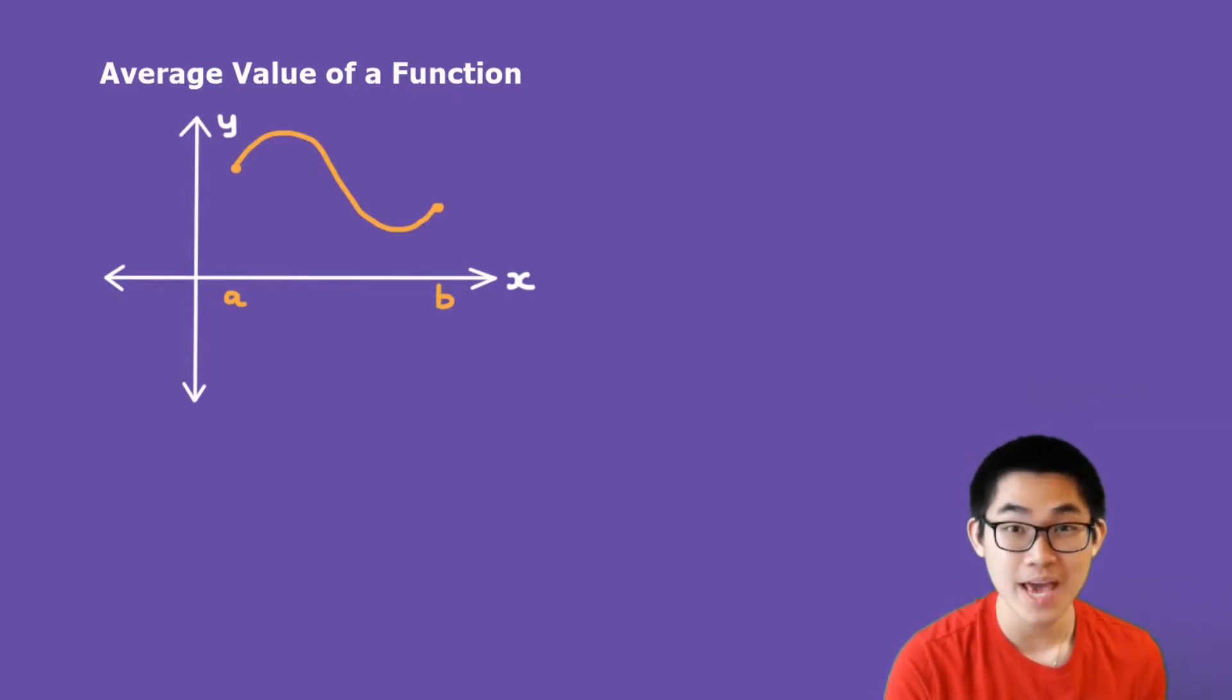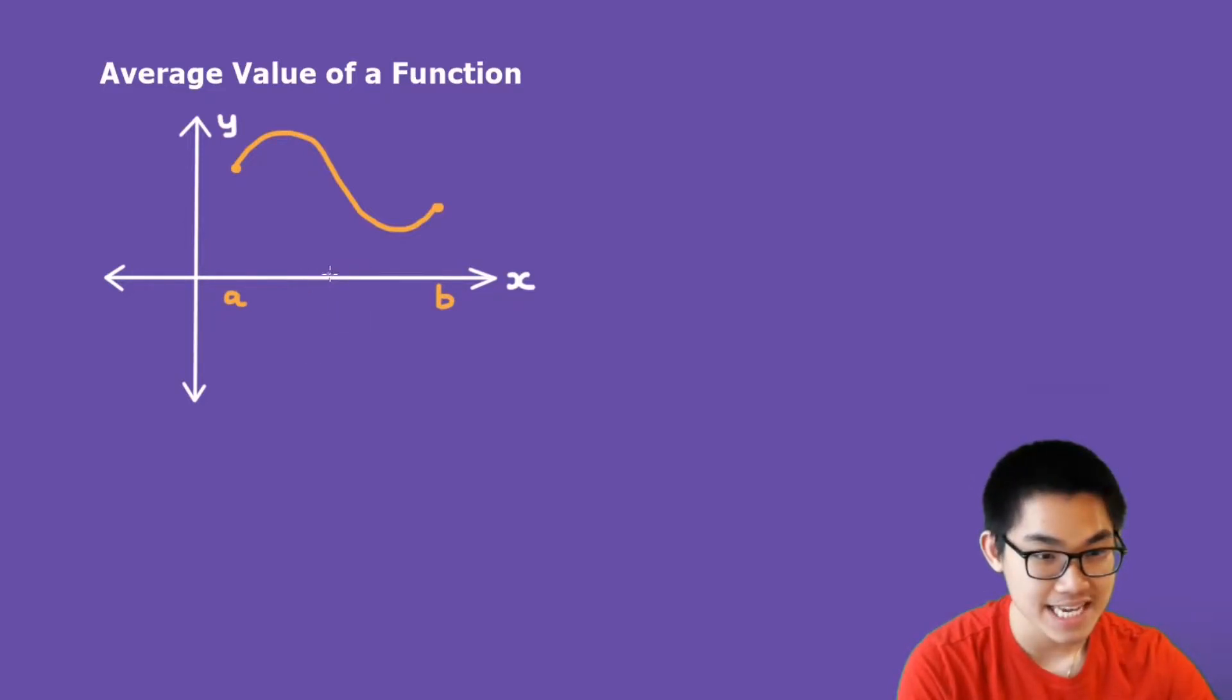So suppose we have a function looking like this, where this is a and this is b. The first thing we're going to do is find c, and c is going to be somewhere between a and b. Let's say c is right here.